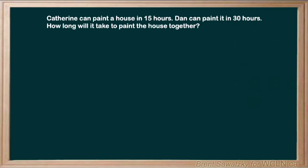In this question we're looking at rates and the project is painting a house. We can get organized by saying we have Catherine, and it takes her 15 hours per house — 15 hours of work to get that house done. We're also told we have Dan, and it takes 30 hours for Dan to paint the house. A little bit slower there.